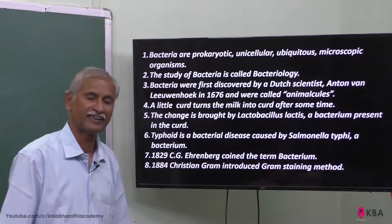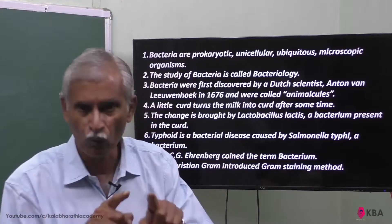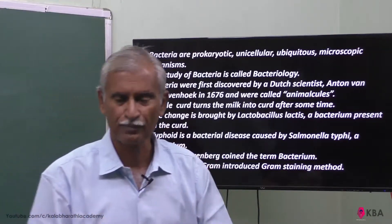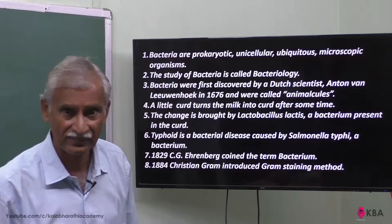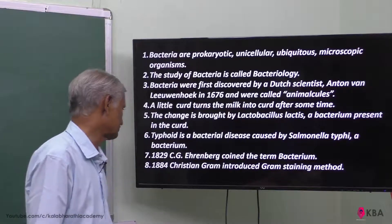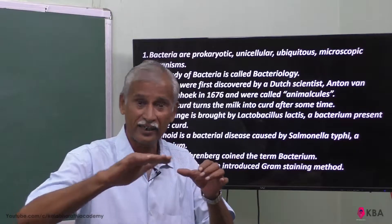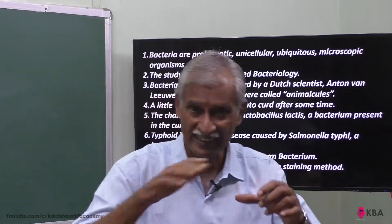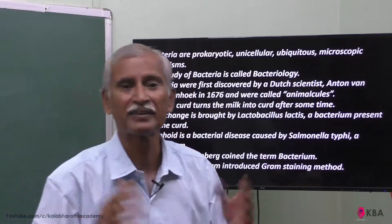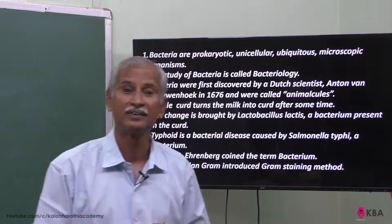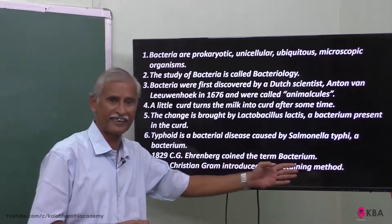That is what we will learn. The organism is called Bacterium, also called Animalcules. Using the Christian Gram staining method, you can see the color under the microscope. This process is called the Staining Procedure — specifically the Gram Staining Method.